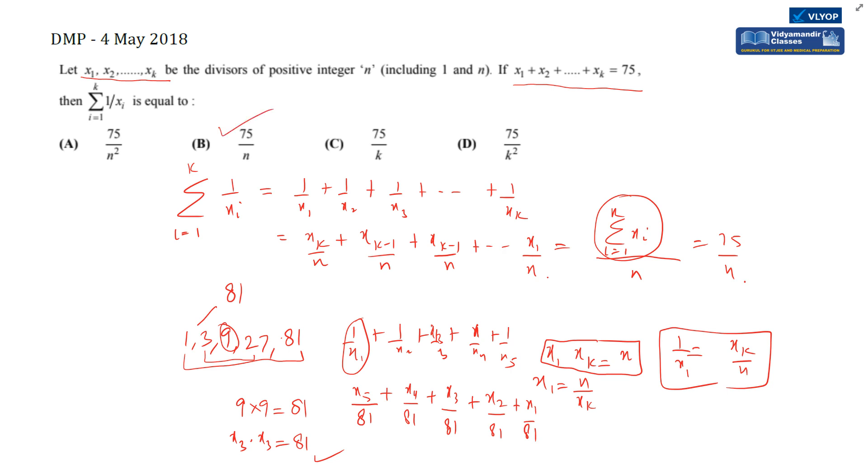The answer is 75/n. The main thing I had to show was that the relationship between first and last divisor product equals n. This is a common thing but generally we don't observe this. For solving this question, we have to observe this pattern.